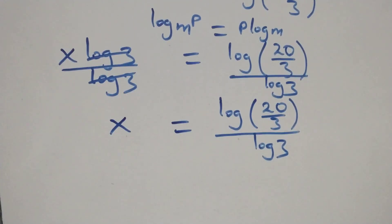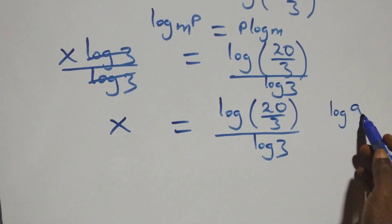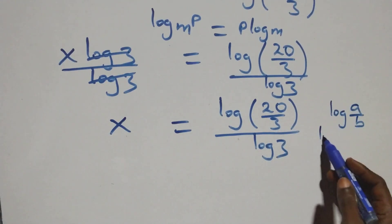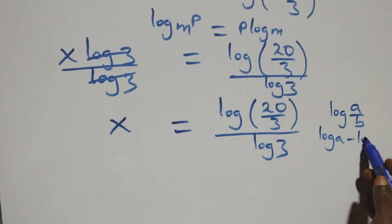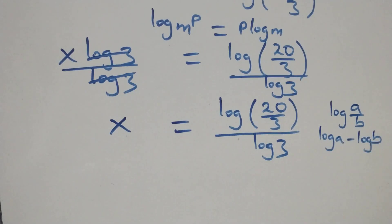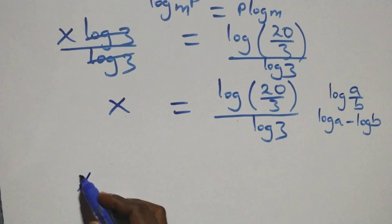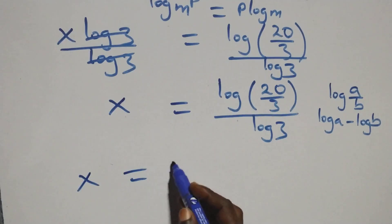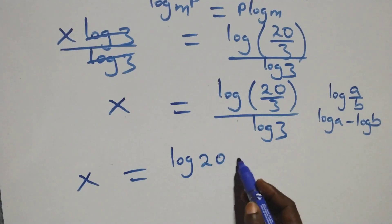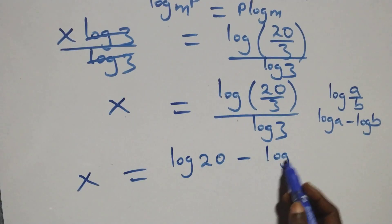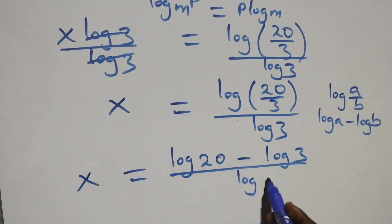From what we have here, this follows the law of logarithms. When we have log(a over b), this is the same thing as log a minus log b. So here, what we have becomes x equals log 20 minus log 3, all over log 3.